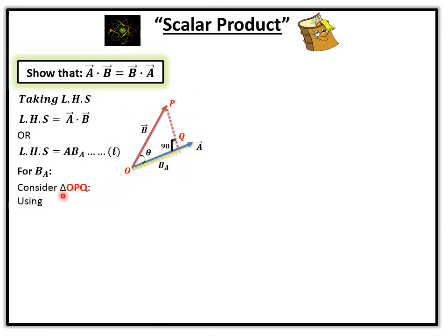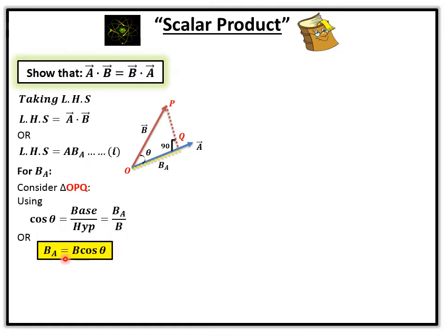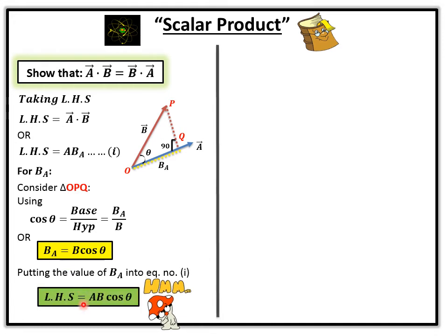Now consider triangle OPQ. Using the formula of cosθ, which equals base upon hypotenuse, we identify the base and hypotenuse values in this triangle. We put B subscript A divided by B, giving us B subscript A = B cosθ. Now putting this value into equation number 1, we get: left hand side = |A||B|cosθ. We have now derived the left hand side.